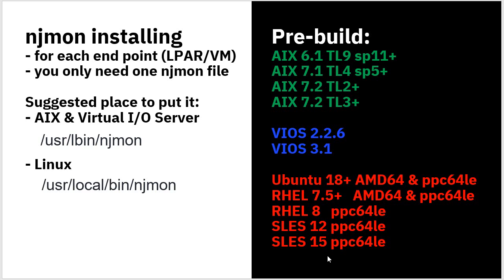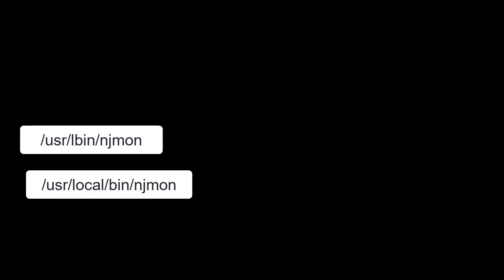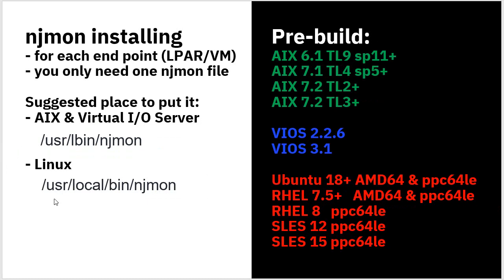For each of your particular logical partitions or virtual machines, you just need one NJMon file — you don't need all of these. I recommend you place that file in /usr/lbin for AIX, and /usr/local/bin for Linux, unless you have some directory for system admin tools.